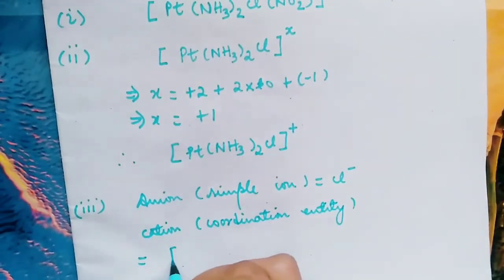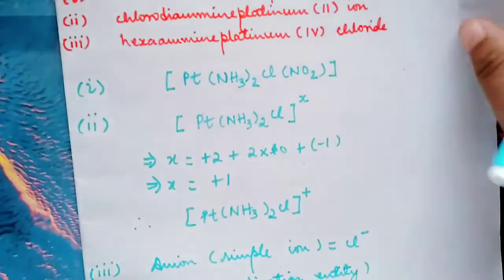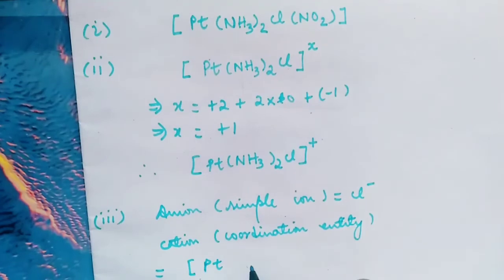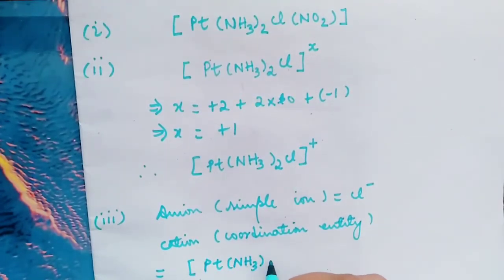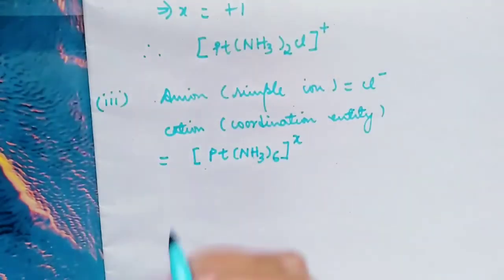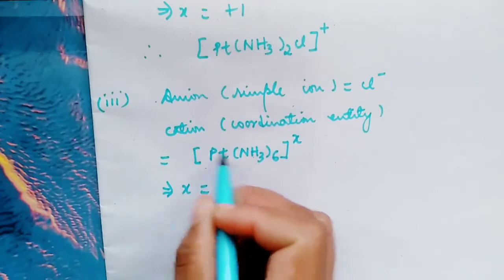Square bracket. Write first the central metal atom platinum, and then hexamine. Hexamine 6, hexaammineplatinum(IV) chloride. So X, we want to know X. What is the oxidation state of platinum?